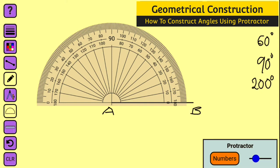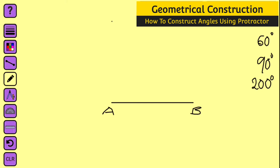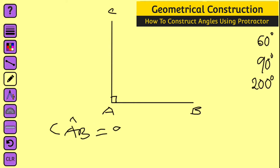We are going to tick on the line which is perpendicular to the horizontal line on my protractor, which locates 90 degrees. I have added a point — take away your protractor and use your ruler to connect the dot and point A. So this is 90 degrees. Let me call this point C, therefore angle CAB is equal to 90 degrees.